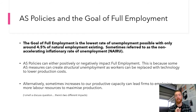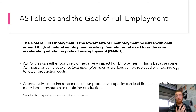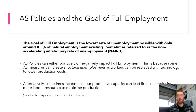However, alternatively, increases to our productive capacity can lead to firms employing more labor resources to maximize production. For example, if there is an increase in infrastructure spending, the government needs to employ labor to create that infrastructure — creating more employment in the short term, and hopefully in the long term through the increased demand for labor that the new infrastructure generates.